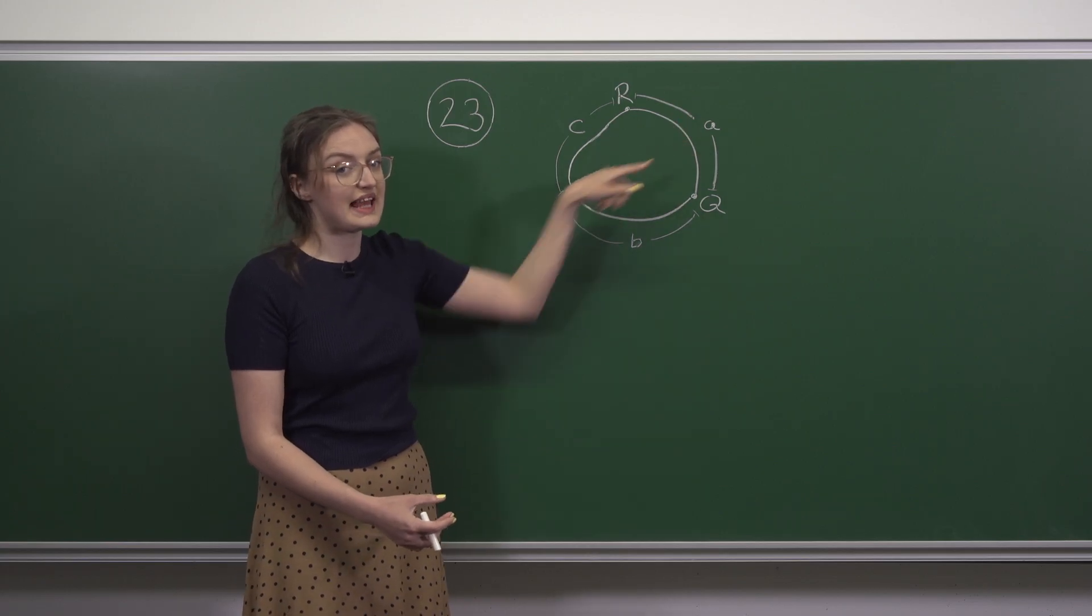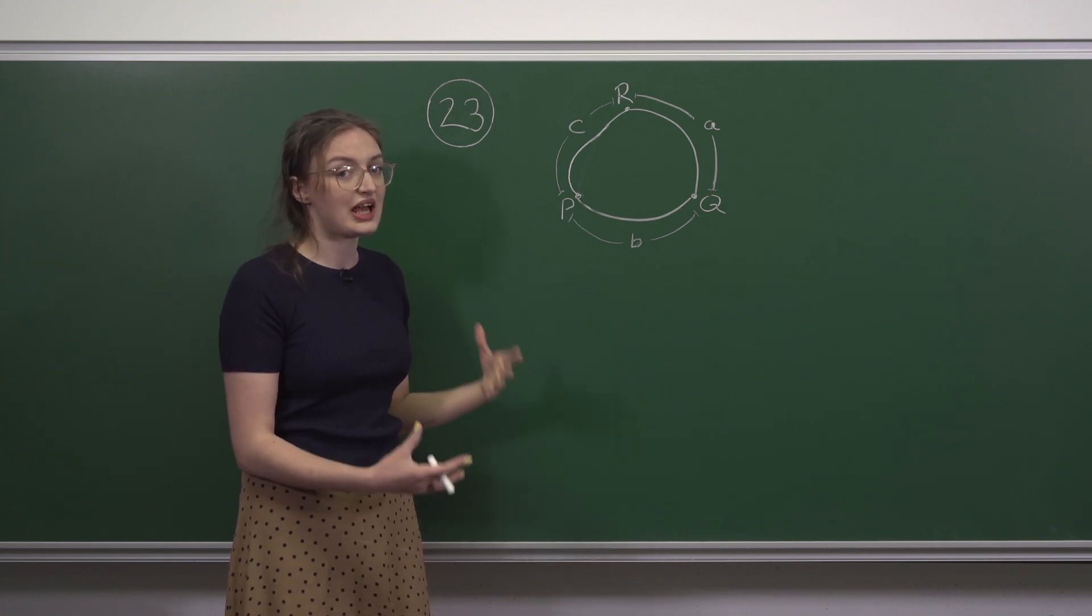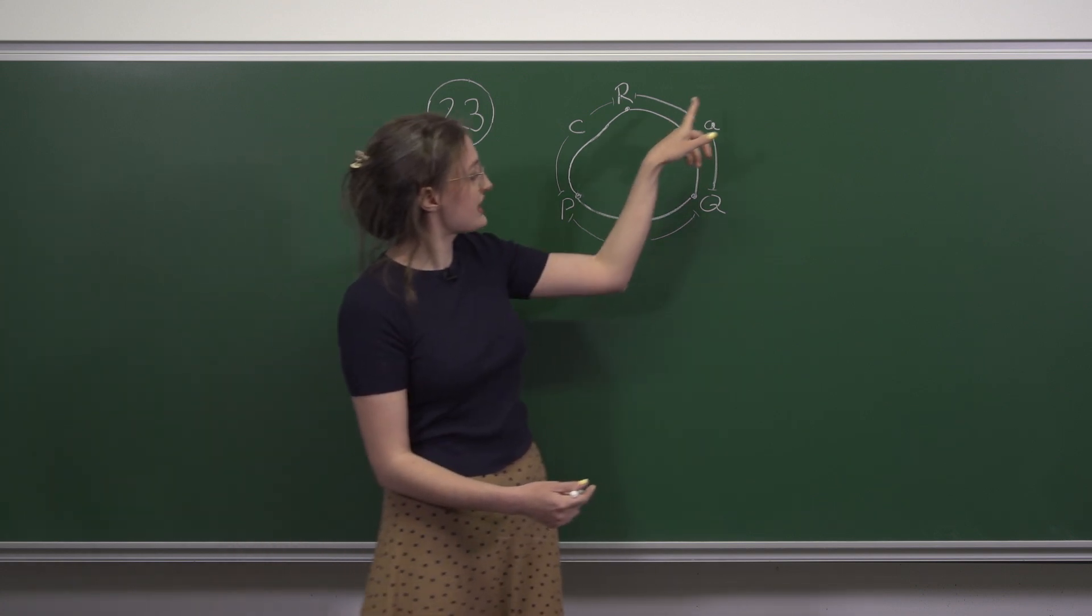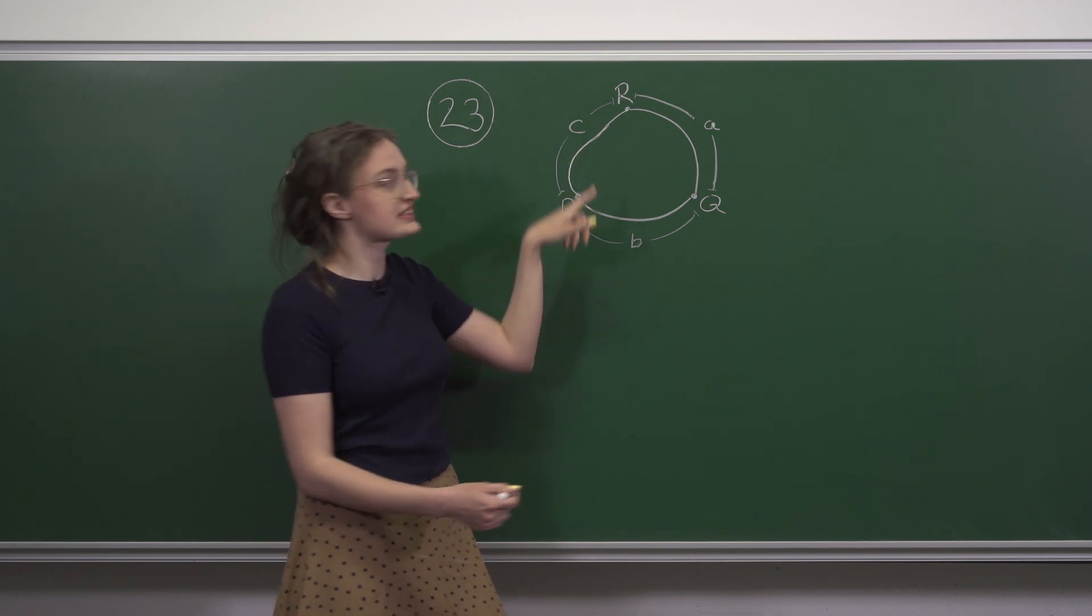I've labeled these lengths with some letters so let's write that down as an equation. We have that A plus B is twice C.